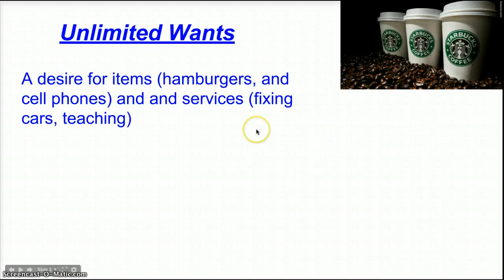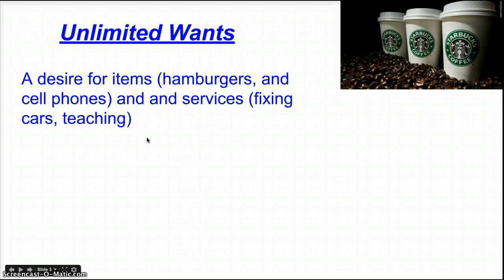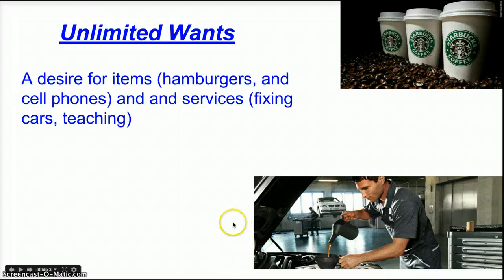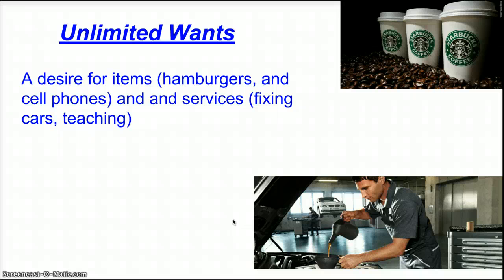A service may not have a physical item that you can see, but it produces an end result that you want. Obviously, I'm doing that right now — I'm teaching you about certain concepts, hopefully helping your understanding of economics, which you can use for the rest of your life. Another example is fixing your car. Most of us, when we need something done to our car, don't do it ourselves anymore. Oil changes can be very complicated, and we don't have the expertise, skills, or tools, nor do we want to spend the time. We'd rather hire someone. That is a service that we spend money on.